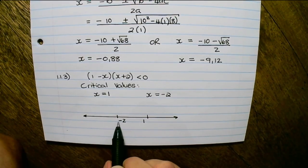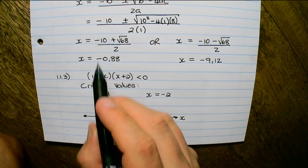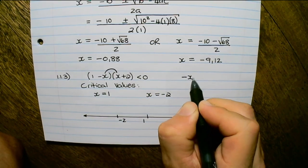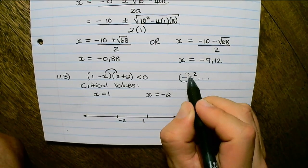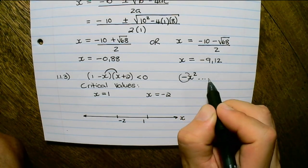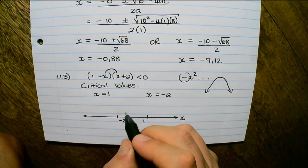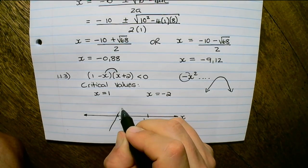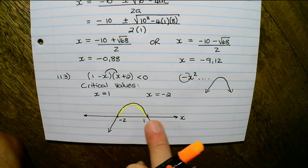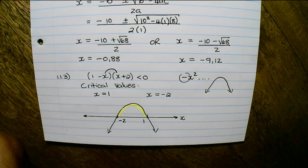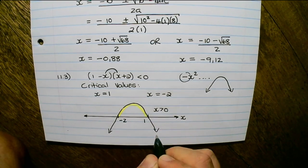If I draw it on the number line I have negative 2 and 1 on the x-axis. But we need to be careful — we just need to multiply out the x's to see that it's negative x squared, and that determines the shape of the parabola. The value in front of the x squared tells us whether this is a smiley or frowny graph. This is negative, so the graph would be frowny — an upside-down parabola — going through these critical points.